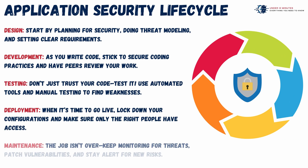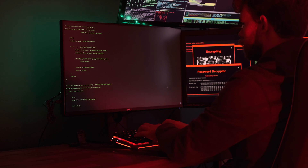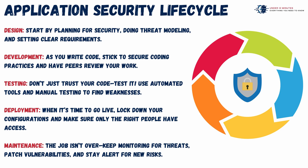Application security is an ongoing journey that spans the entire lifecycle of an application, from its initial design to final retirement. It starts with secure planning and threat modeling, followed by development practices like writing secure code and peer reviews. Rigorous testing with both automated tools and manual methods ensures vulnerabilities are uncovered before deployment. Once live, systems must be tightly configured, with access restricted to authorized users only. Even post-launch, security demands constant vigilance in the form of monitoring, patching, and responding to new threats as they arise. In short, security isn't a one-time task — it's a continuously evolving conversation.